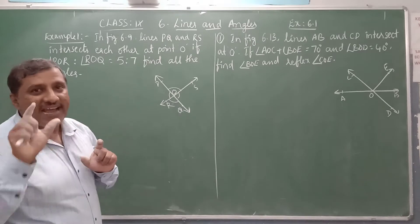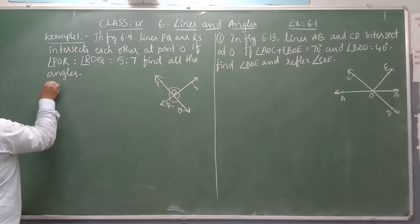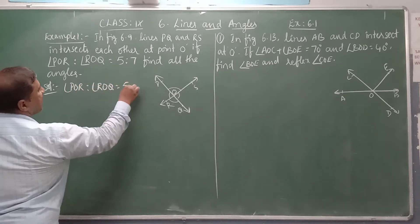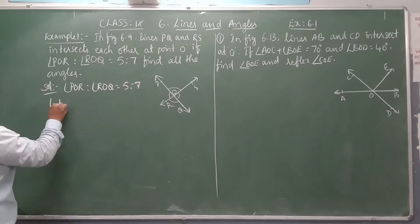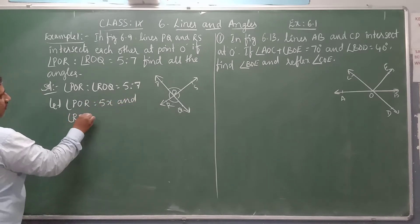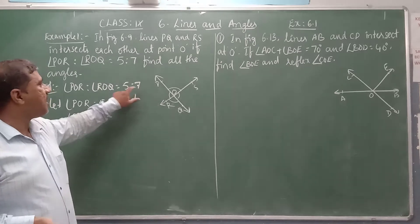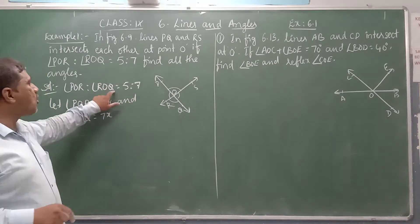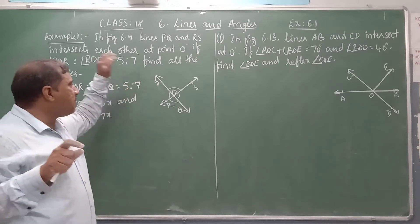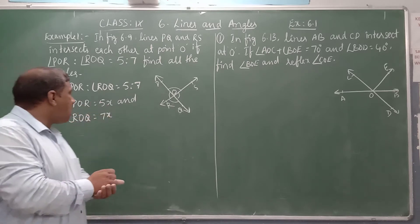Use the concept of linear pair and Theorem 6.1 to find all the angles. Here, angle POR to angle ROQ is equal to 5 is to 7. Let angle POR equal 5X and angle ROQ equal 7X, because ratios are always given in simplest form — they may not be the actual values — that is why we take variables 5X and 7X.